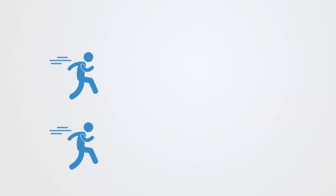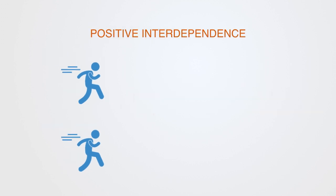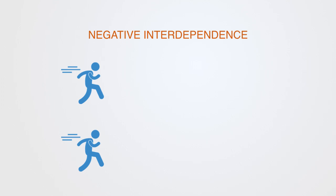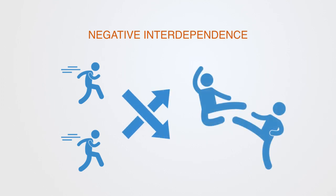Positive interdependence exists when there is a positive correlation among individuals' goal attainments, meaning that individuals perceive that they can attain their goals if and only if the other individuals with whom they are cooperatively linked also attain their goals. Inversely, negative interdependence exists when there is a negative correlation among individuals' goal achievements — individuals perceive that they can obtain their goals if the other individuals with whom they are competitively linked fail to obtain their goals.